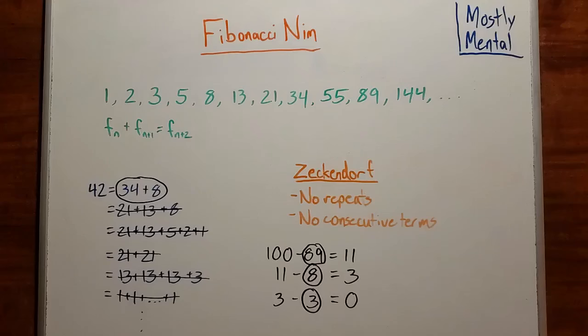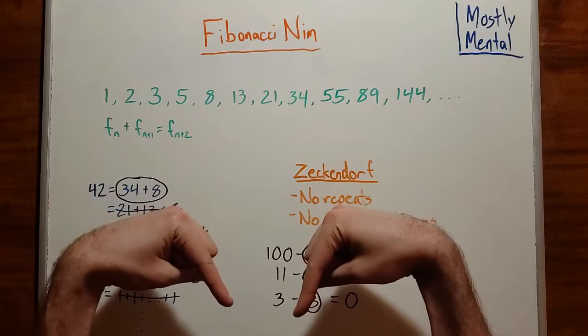And it's not too hard to show that we'll never get consecutive terms from this process. So this is a valid Zeckendorf representation. And with a little bit of modification, this method can be used to prove that the representation really is unique. I'll leave that as an exercise for you down in the comments.